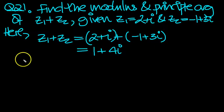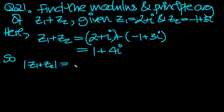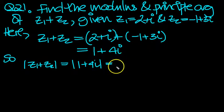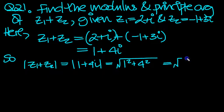So here, the modulus of z1 plus z2 is equal to simply the modulus of 1 plus 4i. That's just two sides of a triangle. So that would equal the square root of 1 squared plus 4 squared, which is 16 plus 1 is 17. So it's root 17 is the modulus.